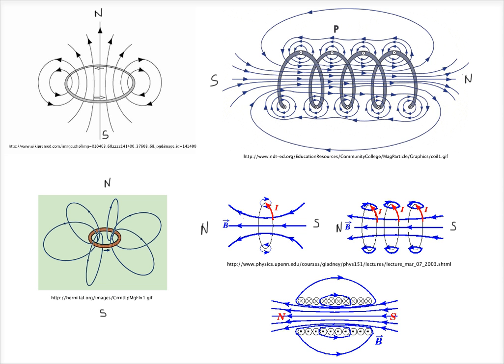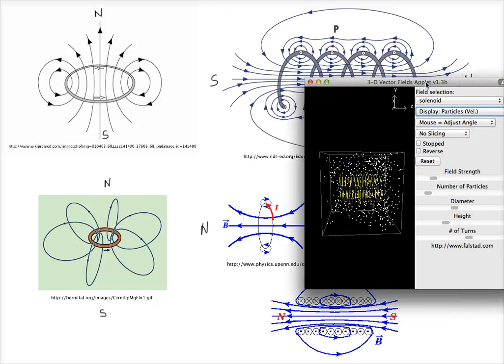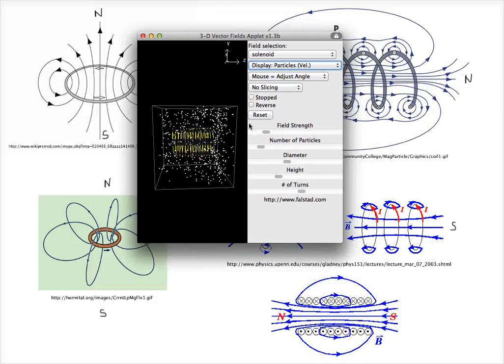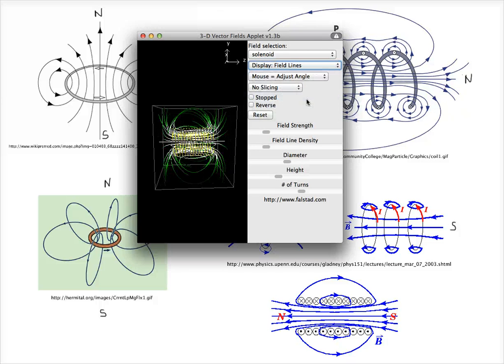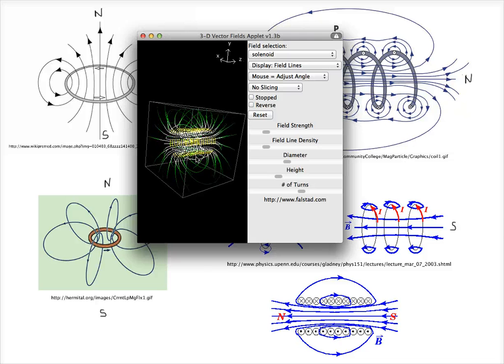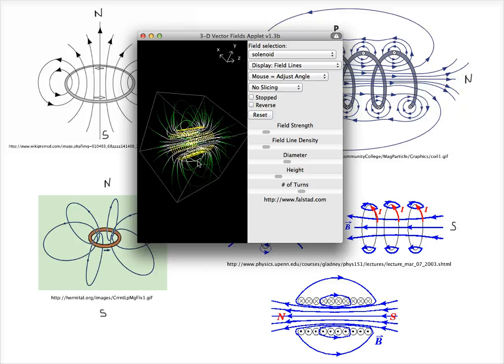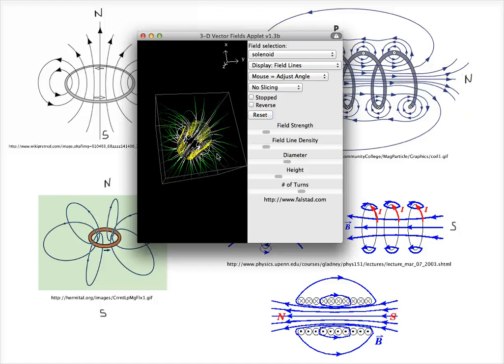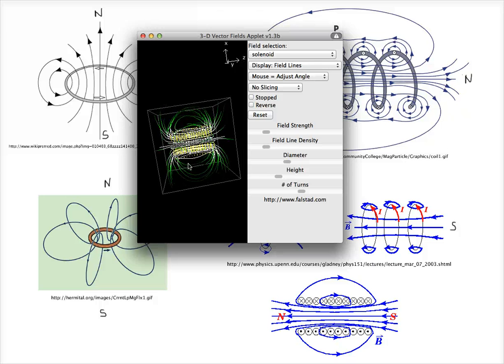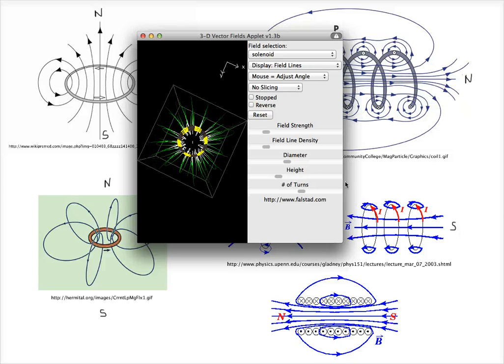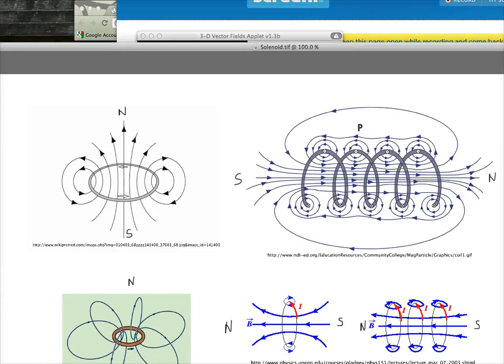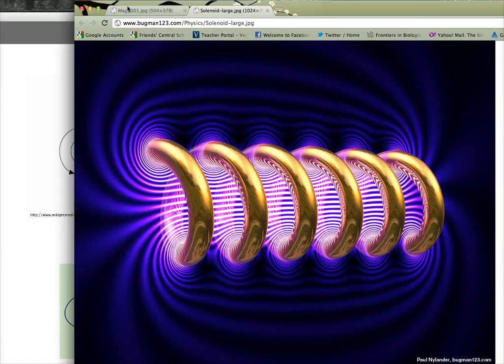I want to show you another way to visualize this. Here we have a solenoid showing three-dimensionally. Here are the magnetic field lines being produced by the solenoid. In the center they're very strong because they're all being added up inside, and on the outside they're weaker.